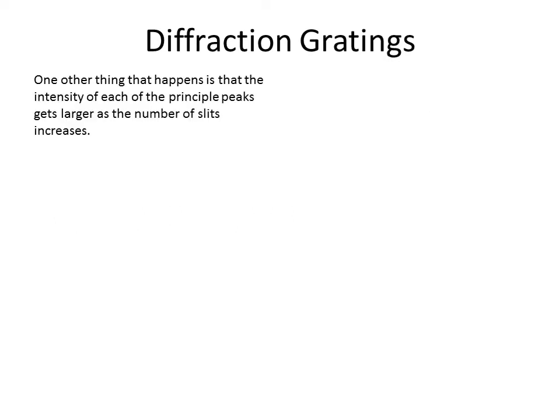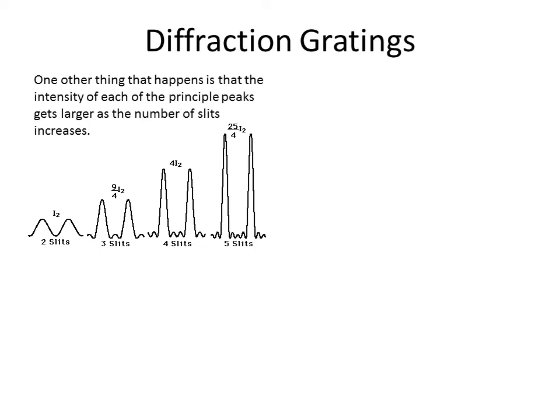The maxima are getting thinner, but the intensity of the light has to still go somewhere. What happens is the intensity increases: wide peaks are a little dimmer, and the more slits we add, the more intense those individual peaks become — they go up and up, which is a cool effect.